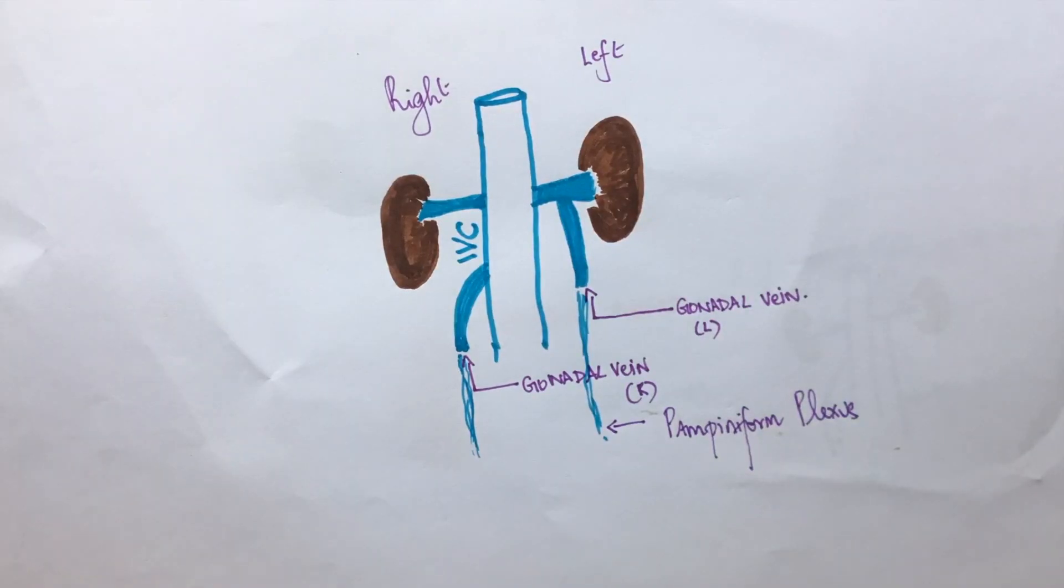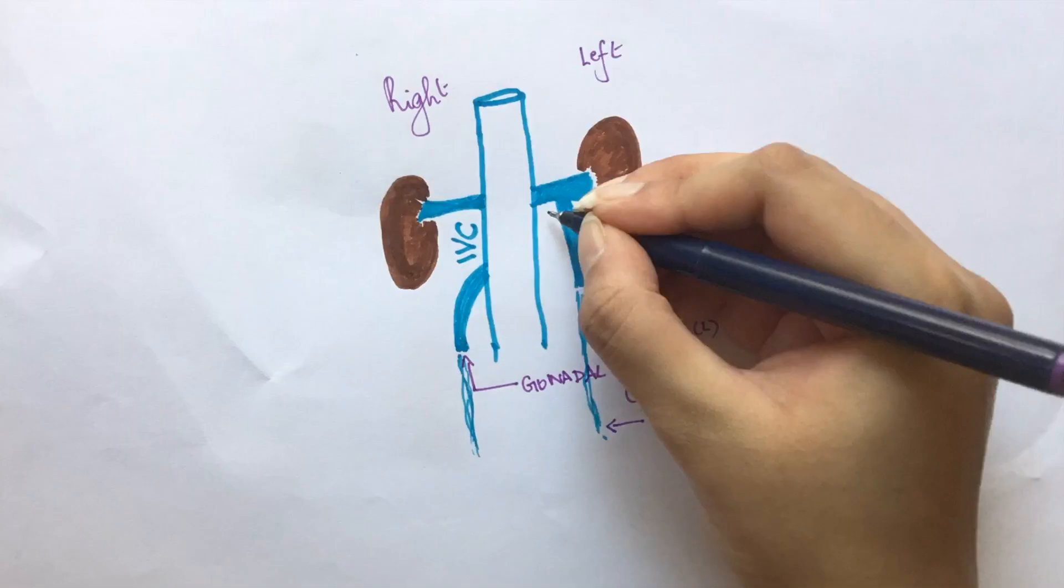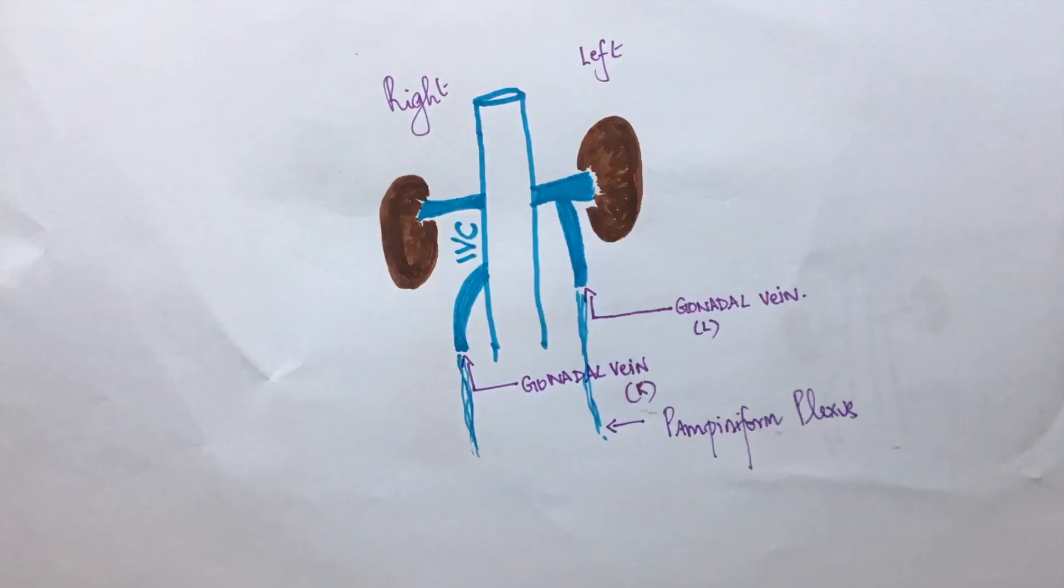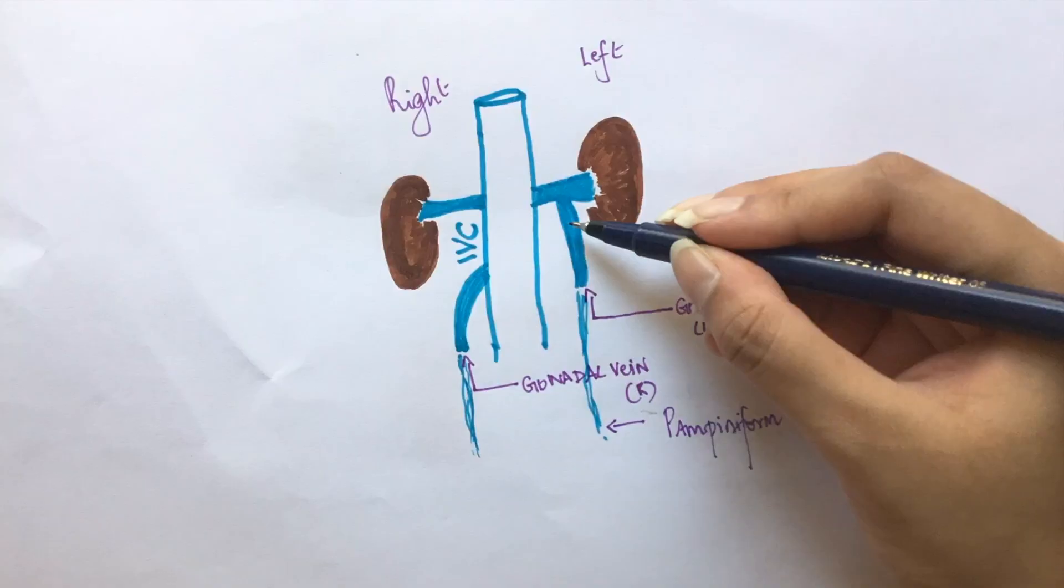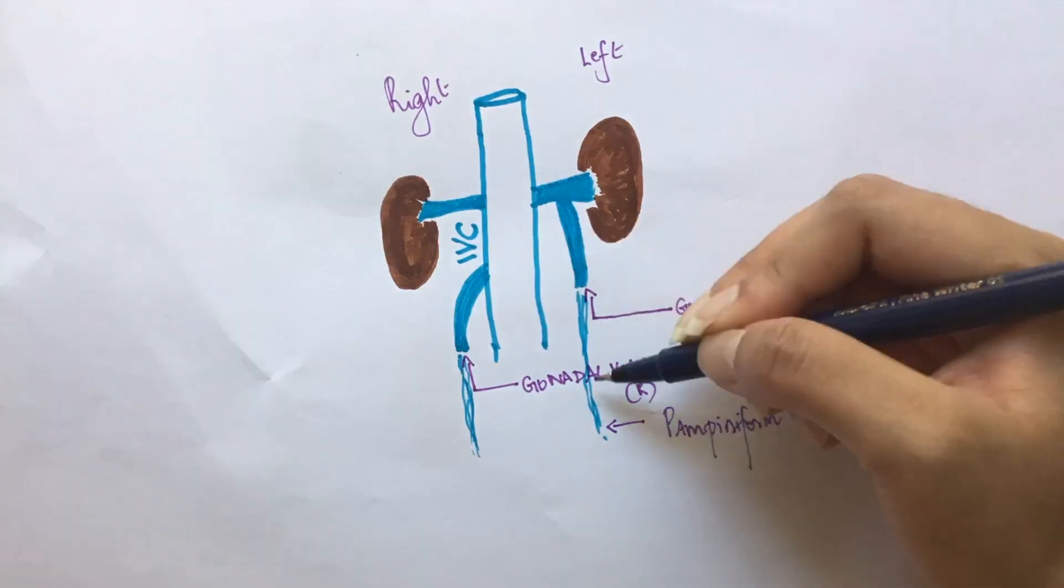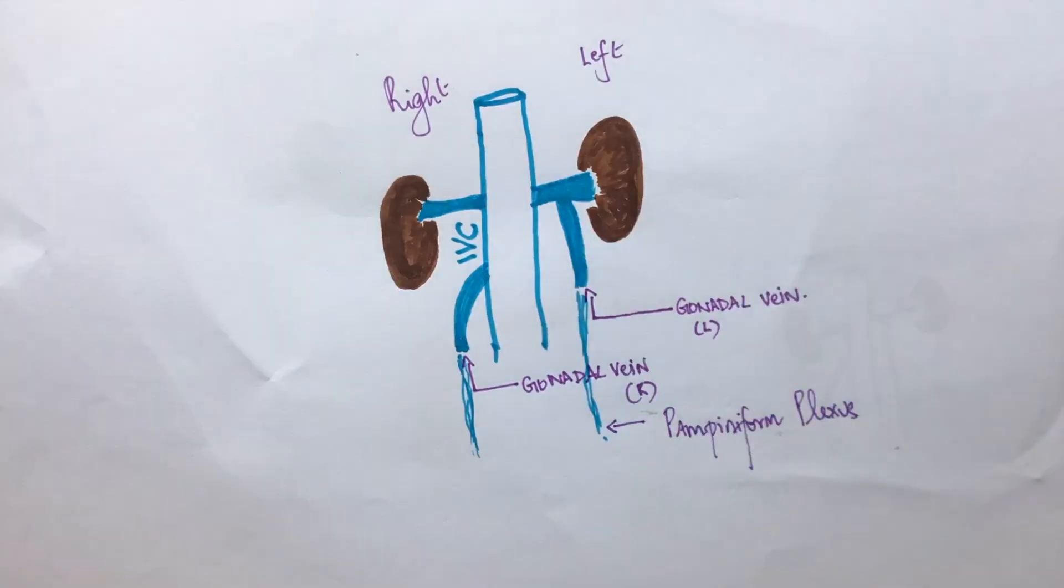This is what the venous system of the gonads and kidneys looks like. Varicoceles are caused by the dilation of pampiniform plexus. The left gonadal vein and the left renal vein are almost perpendicular to each other, so the flow here is pretty turbulent. The increased pressure in these veins leads to dilation of the pampiniform plexus and results in varicocele. On the right side, turbulence is not an issue. This is why varicoceles are more common on the left side compared to right.